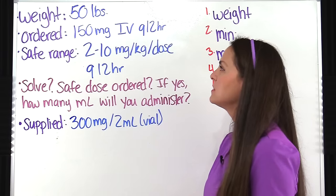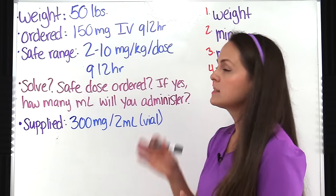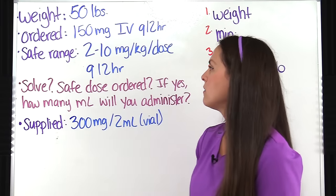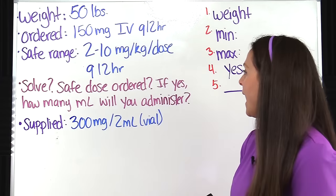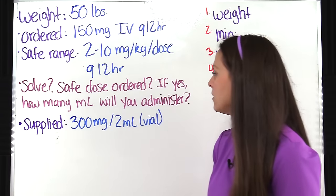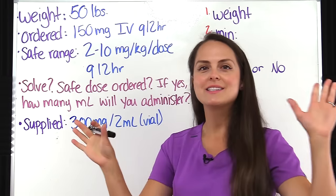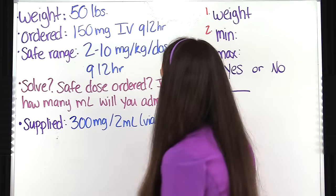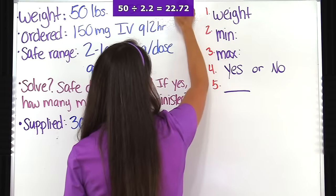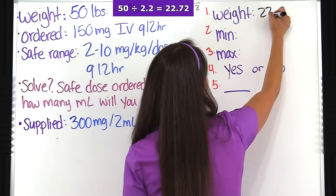The fourth problem says we have a child who weighs 50 pounds, and the doctor ordered 150 milligrams IV every 12 hours. This medication has a safe dose range of 2 to 10 milligrams per kilogram per dose every 12 hours. We need to determine if this is a safe dose, and if so, how many milliliters to administer — supplied as 300 milligrams per 2 mL. First, we convert the weight: 50 divided by 2.2 gives 22.72 repeating, rounded to 22.7 kilograms.